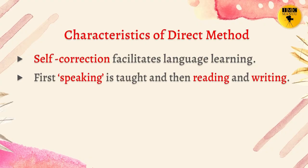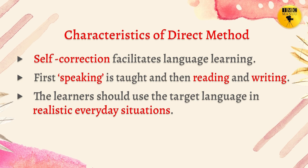Speaking is taught first, and then reading and writing. The learner should use the target language in realistic, everyday situations. Whenever students are asked to talk about day-to-day things they are familiar with, they will not feel burdened — they love to speak in the language. This is one of the important characteristic features of the Direct Method.